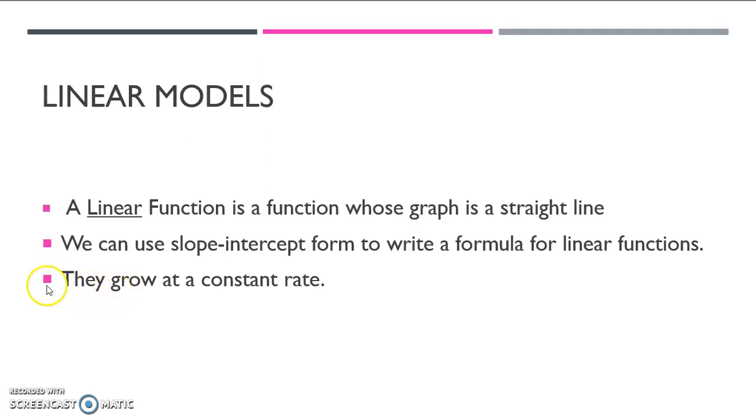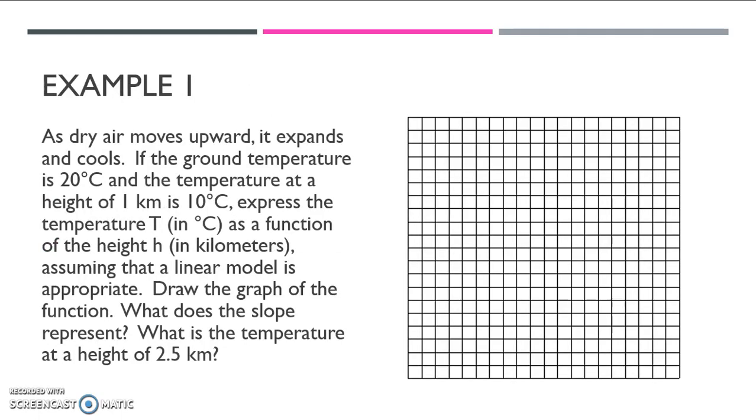Let's take a look at an example of a linear model. In example one, it says, As dry air moves upward, it expands and cools. If the ground temperature is 20 degrees Celsius and the temperature at a height of 1 kilometer is 10 degrees Celsius, express the temperature T in degrees Celsius as a function of the height H in kilometers, assuming that a linear model is appropriate. Draw the graph of the function, what does the slope represent, and what is the temperature at a height of 2.5 kilometers.